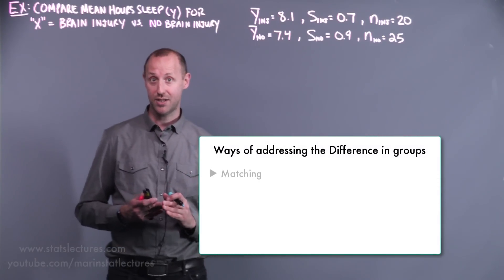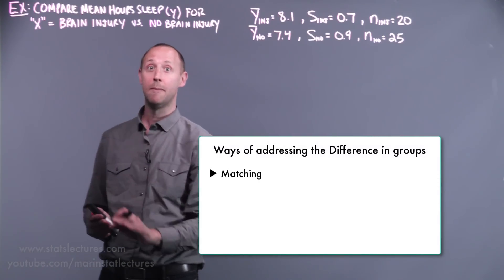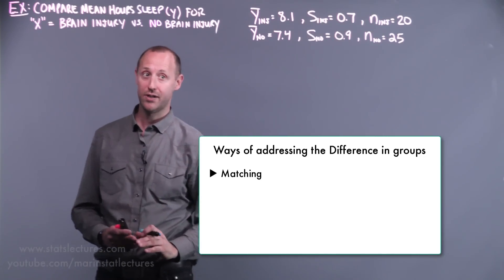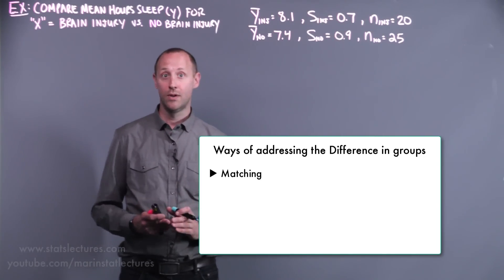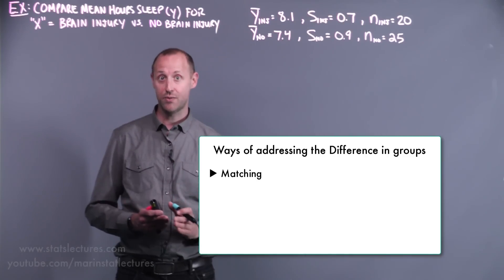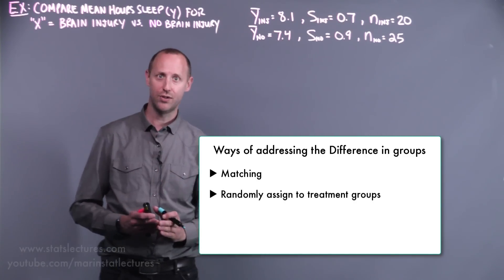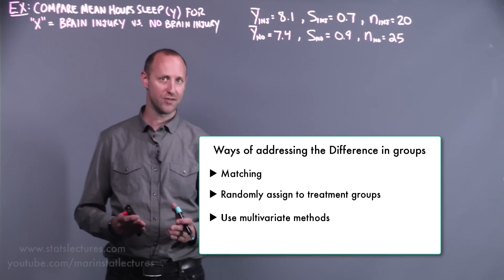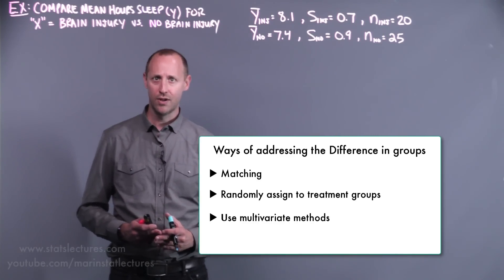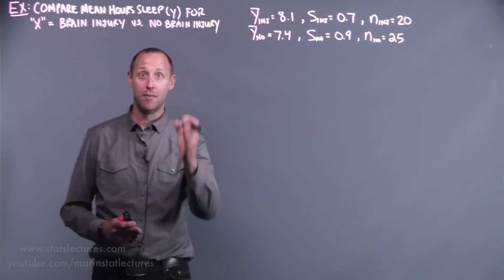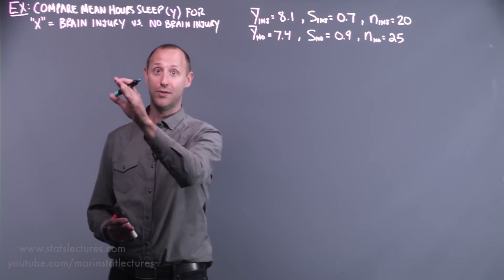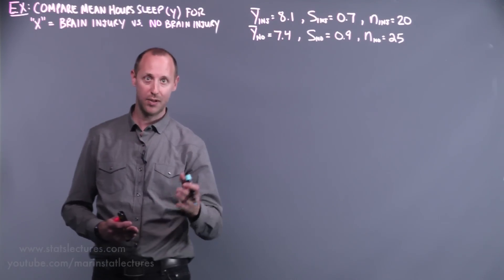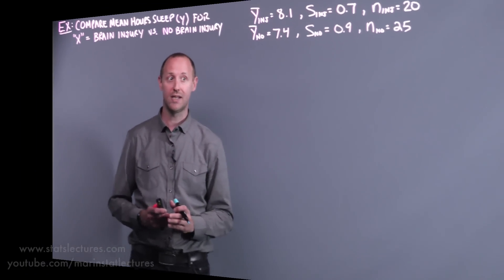We could try matching, so take someone with a brain injury and match them on certain characteristics to someone in the non-brain injury group. We can also, if it's treatments, randomly assign people to one of the two treatments, or we can use multivariable methods to adjust for these. These are all topics we're going to slowly encounter. For now, we just want to start on how do we compare the mean of two independent groups and build up this test, and then we'll slowly extend it and build in these other concepts.